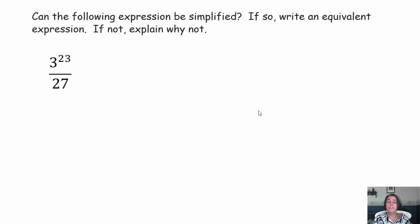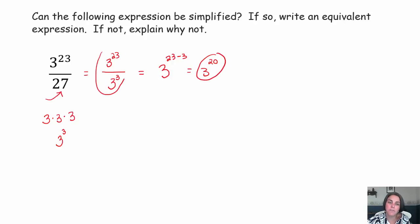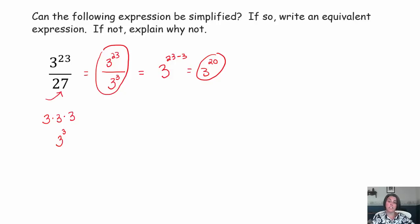Can you simplify this expression? In order to simplify it, you need to recognize that 27 is 3 times 3 times 3, so 27 is actually 3 to the third power. So this is 3 to the 23rd power divided by 3 to the third power. Keep the base of 3, subtract the exponents: 23 minus 3 gives 3 to the 20th. If you need to write out 23 threes in the numerator and three threes in the denominator and divide out pairs, that's fine. But I find it much more efficient to subtract the exponents and keep the base.